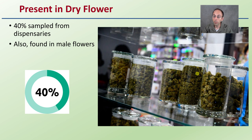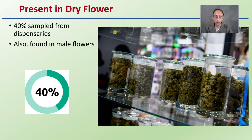Hop latent viroid is also present in dry flowers — not just super young plants but also fully mature harvested dry flower. 40 percent of samples from dispensaries tested positive for hop latent viroid, showing how widespread it actually is. It's also found in male flowers, which is another reason for concern even if you're only using plants for breeding purposes — you don't want male plants carrying hop latent viroid.